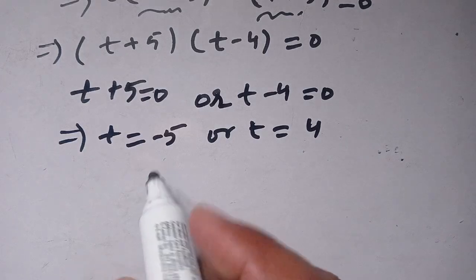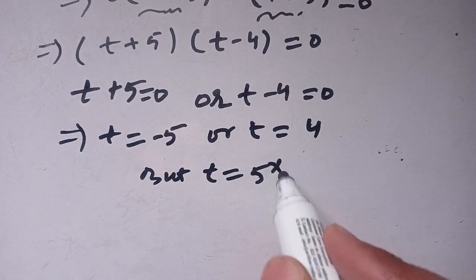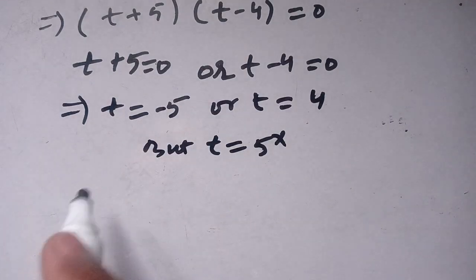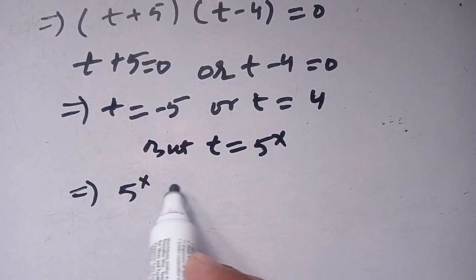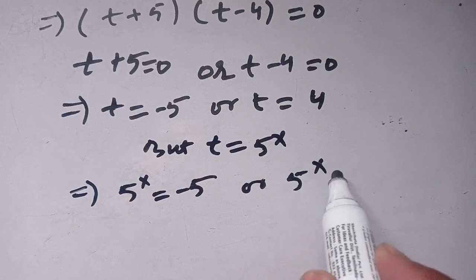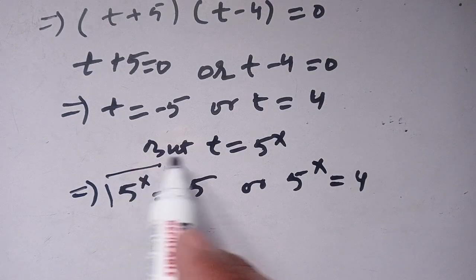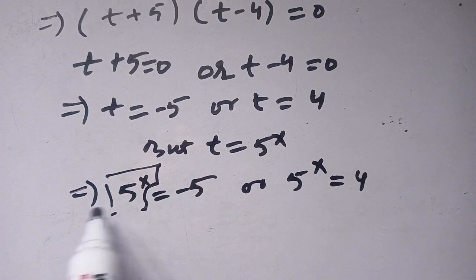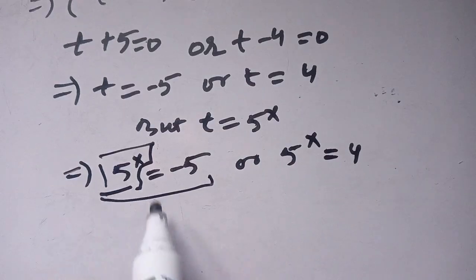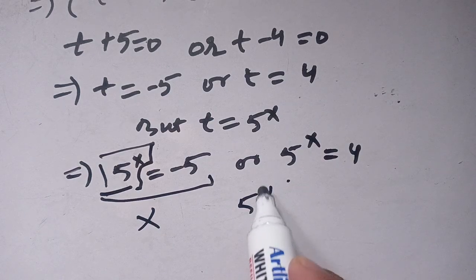Now substituting back t equal to 5 power x, we get 5 power x is equal to minus 5 or 5 power x is equal to 4. Since an exponential is always positive, the value t equal to minus 5 can be rejected. We reject that case and only consider 5 power x is equal to 4.